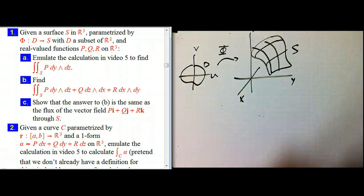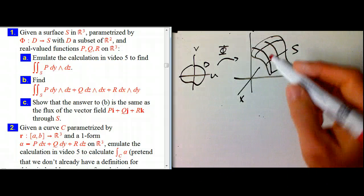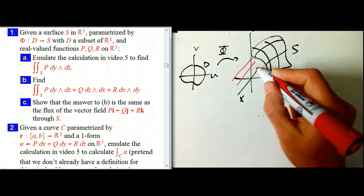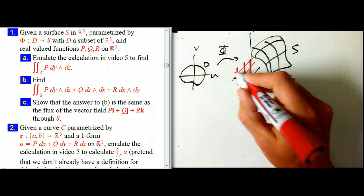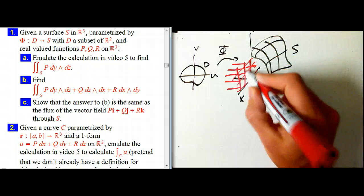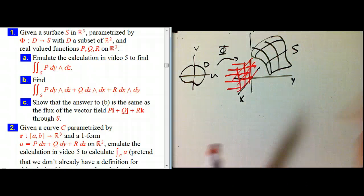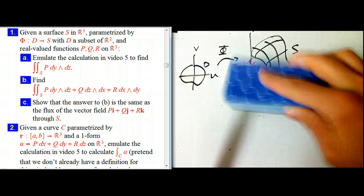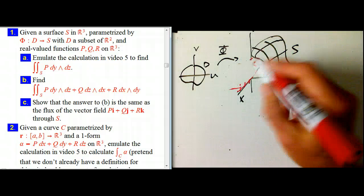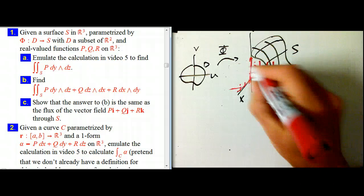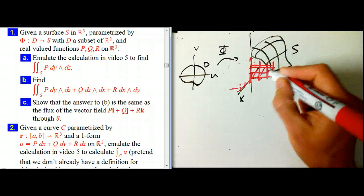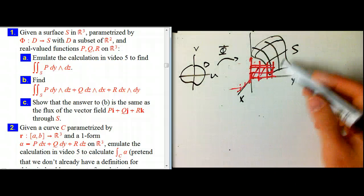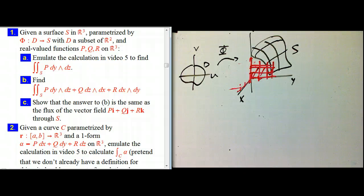So let me just sketch the two form, P dy wedge dz. dy wedge dz, that's tubes of flux that go this way. And so we can think of it as a fluid flowing. And I just totally screwed that up. Messed up already, it's dy wedge dz. That would be dx wedge dz, sorry. dy wedge dz has the fluid flowing basically in the x direction.